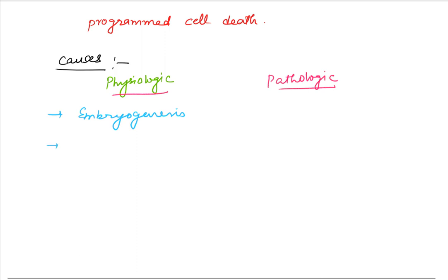Apoptosis is also involved in the involution of hormone-dependent tissue. For example, in the menstrual cycle and ovarian follicular atresia in menopause.